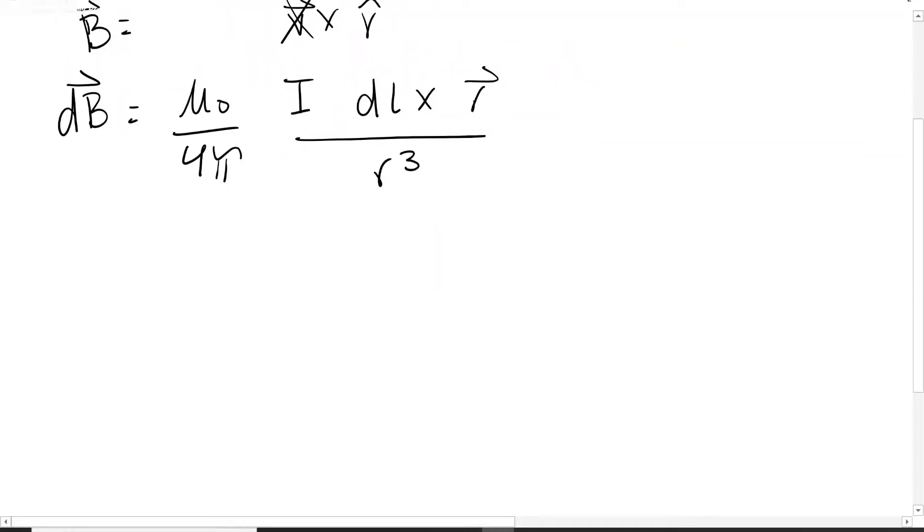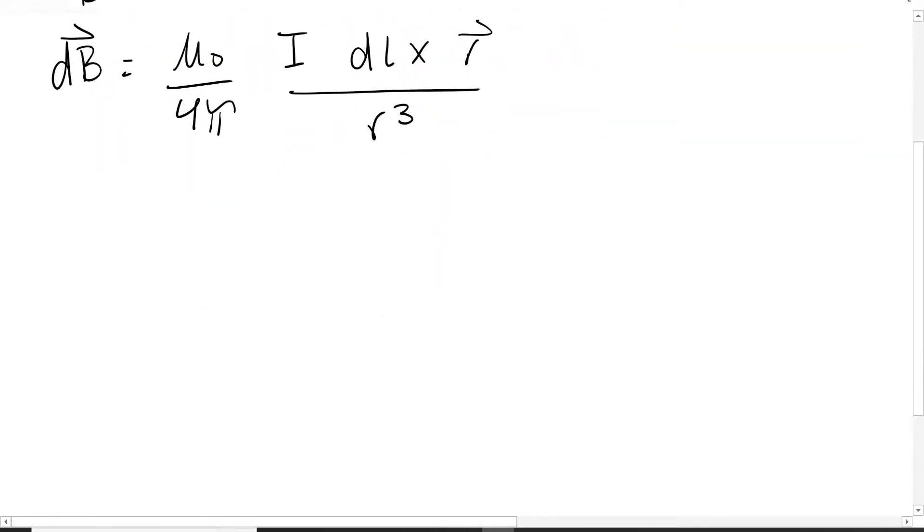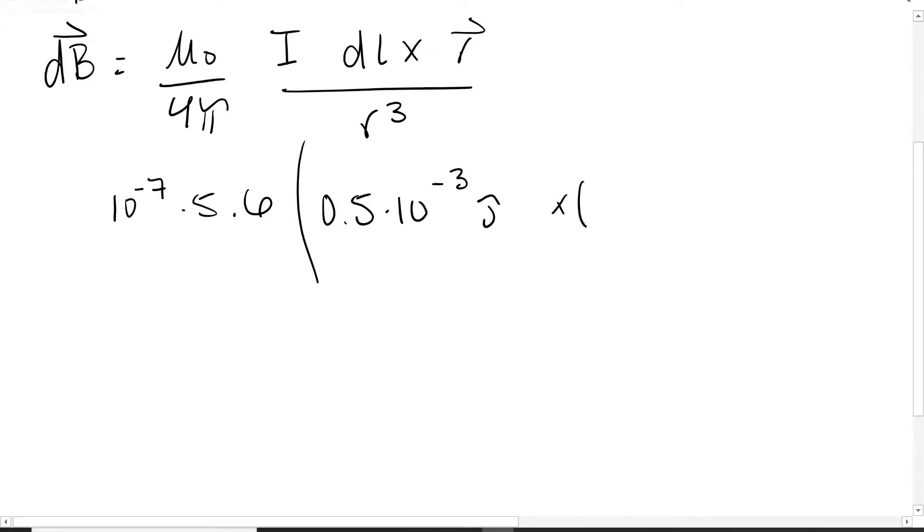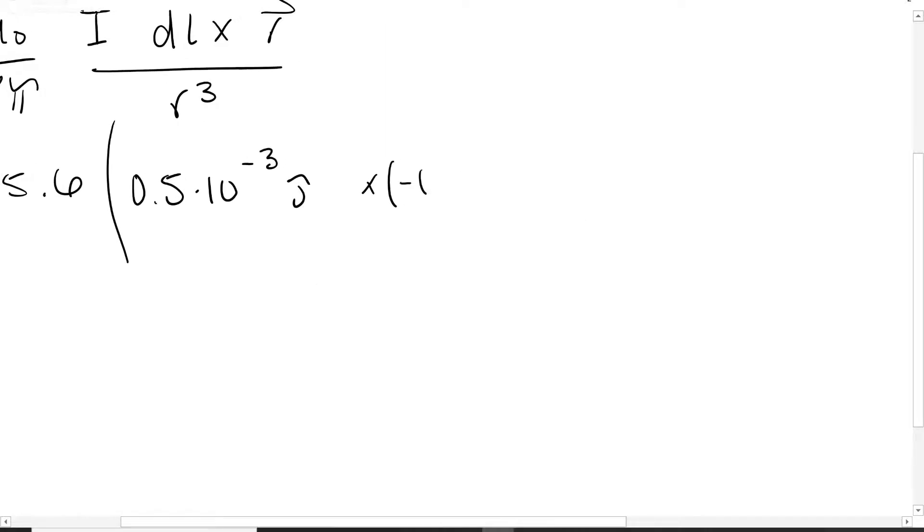The first step is to write down what we have. So mu naught over 4 pi is 10 to the negative 7, our current is 5.6 amperes, and then we're doing the cross product. dl is 0.5 times 10 to the negative third in the j direction, crossing that with our r which is in two different directions.